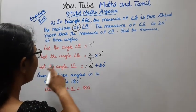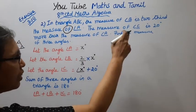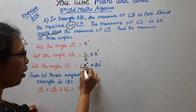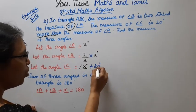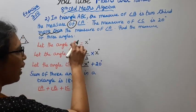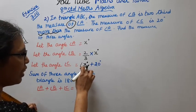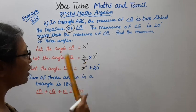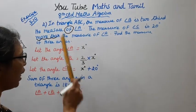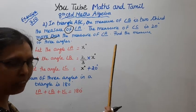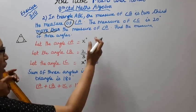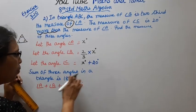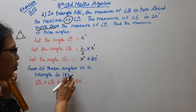The measure of angle C: angle C is 20 degrees more than the measure of angle A. So angle C equals X degrees plus 20 degrees. The sum of the 3 angles in a triangle is 180 degrees.